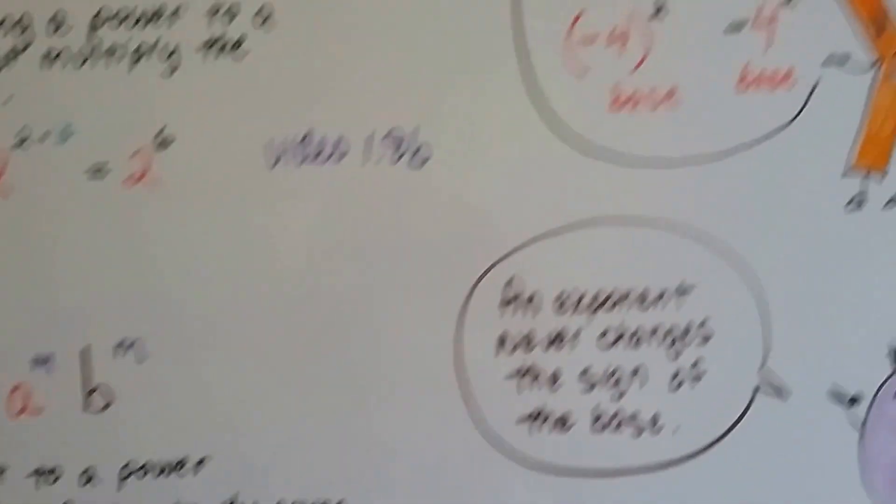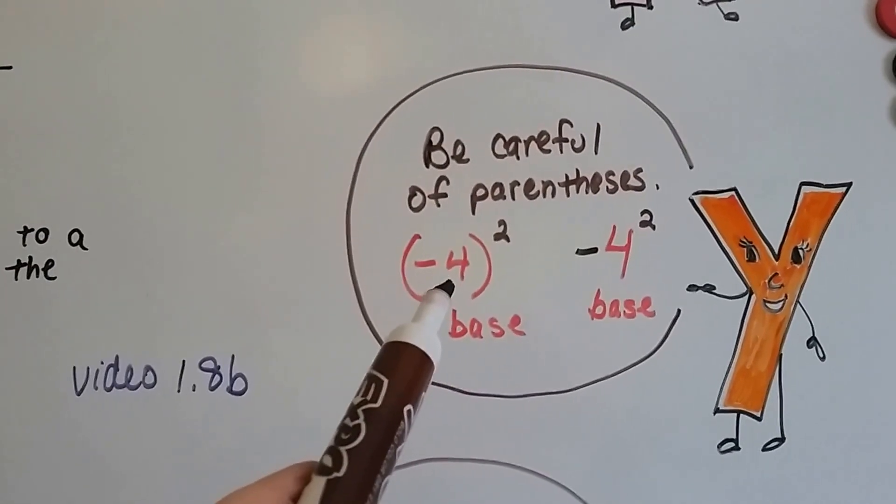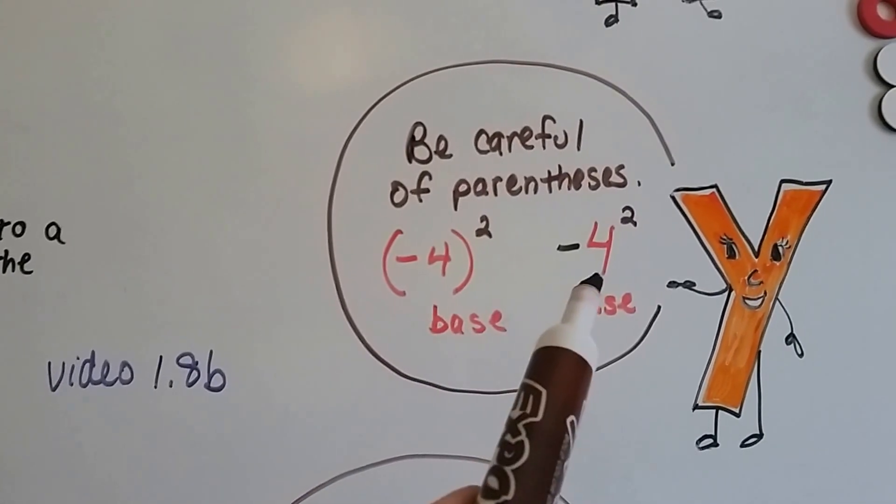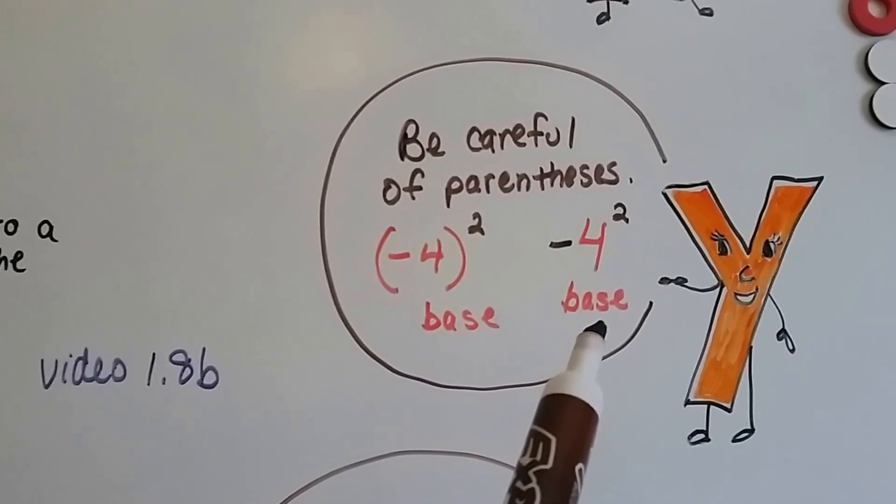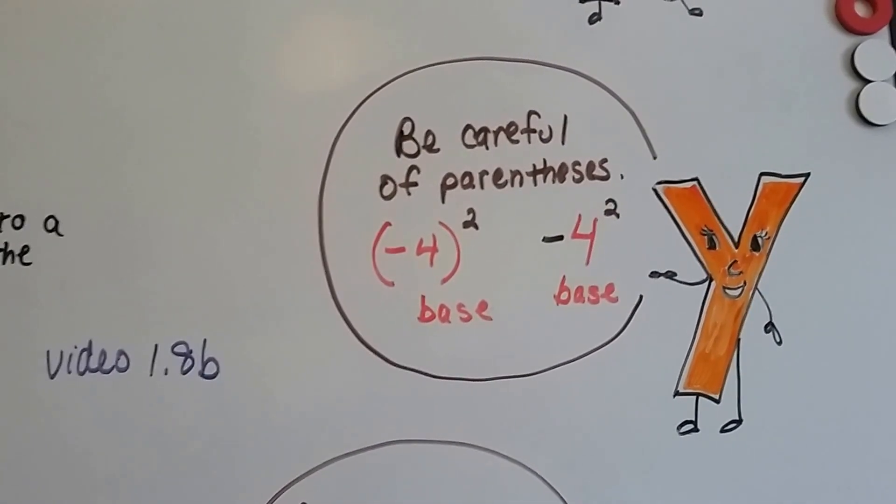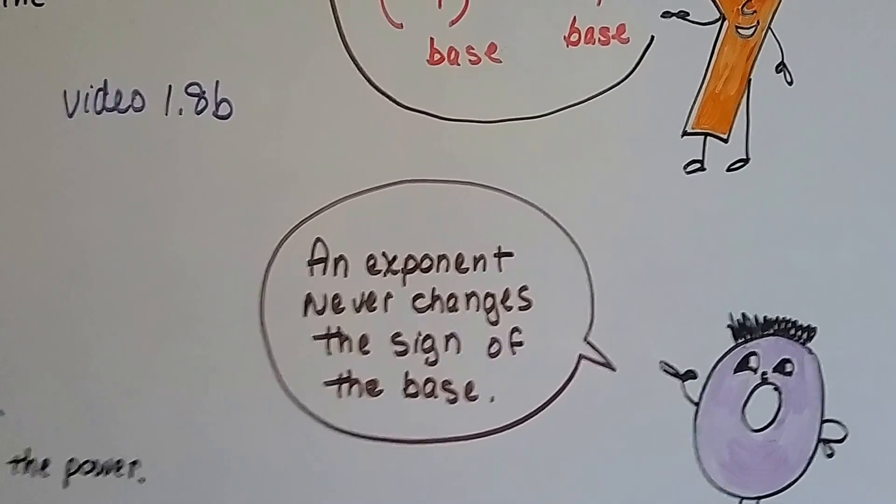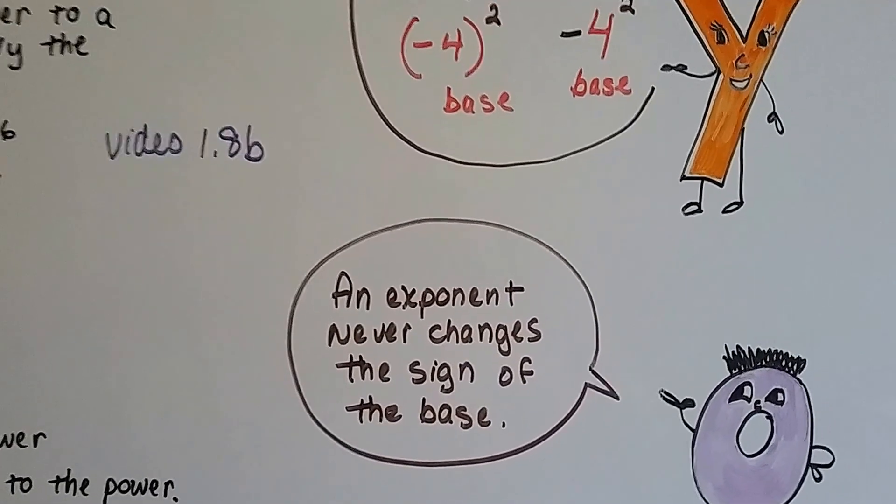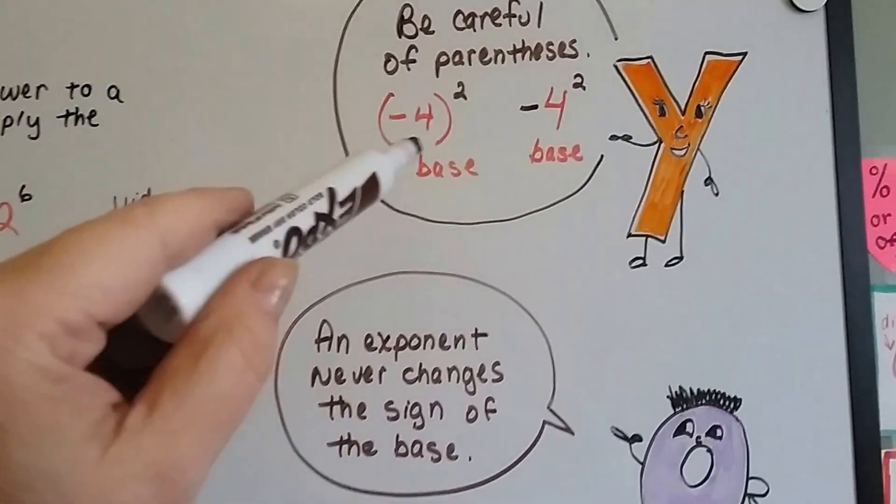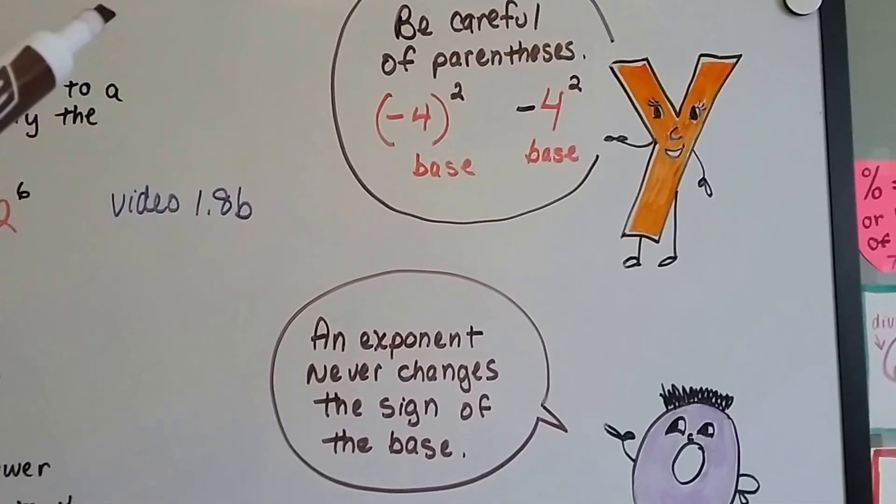So just be careful of parentheses. When you see a negative sign inside parentheses like this, everything in the red is the base. When there's no parentheses, then just the 4 is the base and that exponent will not affect that negative sign. Remember, an exponent never changes the sign of the base.